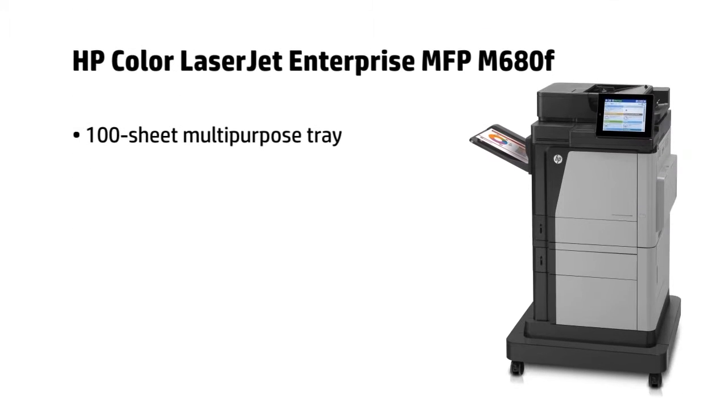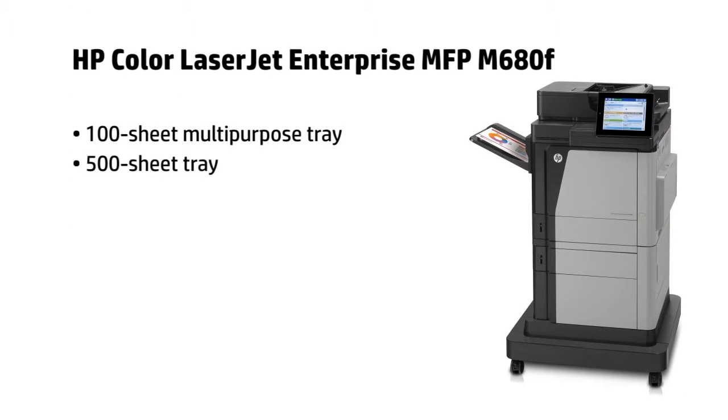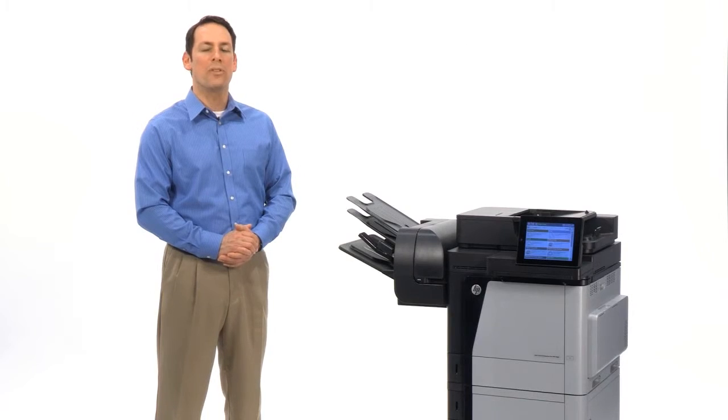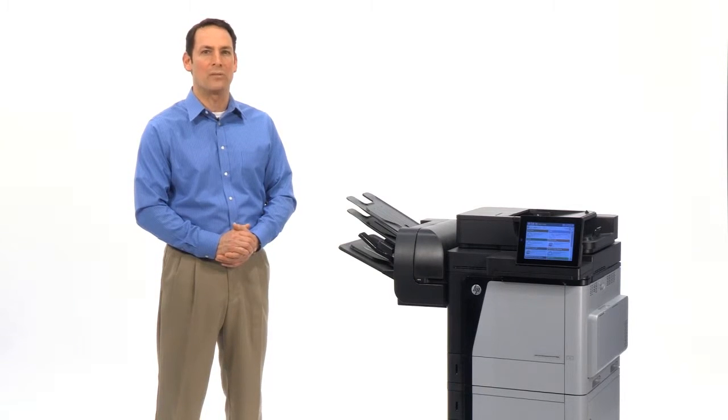In addition to the multi-purpose tray and 500-sheet tray on the DN model, the F model includes another 500-sheet tray for a maximum capacity of 1100 sheets. It also comes with faxing capability and a storage cabinet and stand so you can move the MFP to the spot that's most convenient.